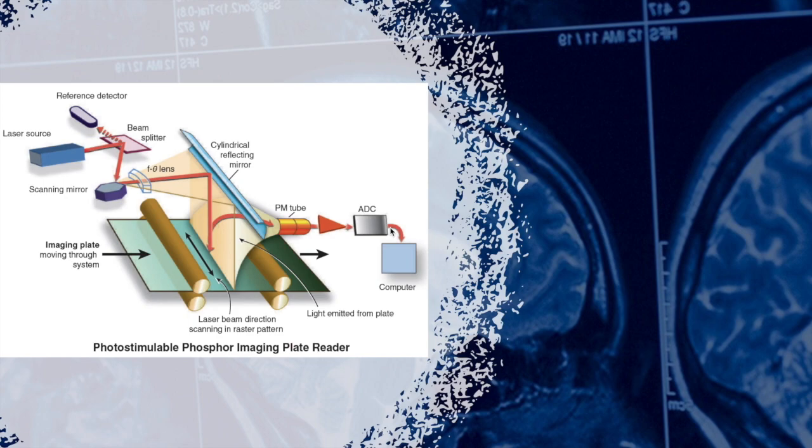When the process is done, the image plate goes to the high intensity light to erase the plate so it can be ready to use again.